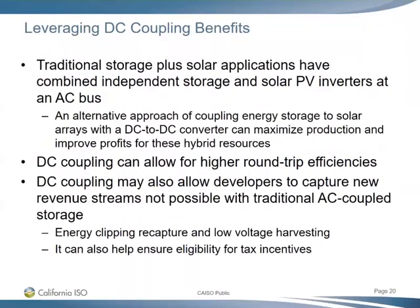Leveraging DC coupling benefits is the final driver identified. Some developers have noted that DC coupling can lower overall capital costs and allow for higher round trip efficiency. Other benefits include energy clipping recapture, low voltage harvesting, and ensuring capture of the investment tax credit. However, Chris noted hearing discussion that DC coupling sizing may be limited to perhaps smaller projects, possibly below 30 or 40 megawatts, so the cost-benefit needs to be done by individual developers. The ISO expects that some projects will pursue this approach.